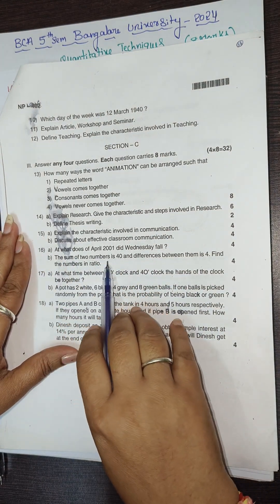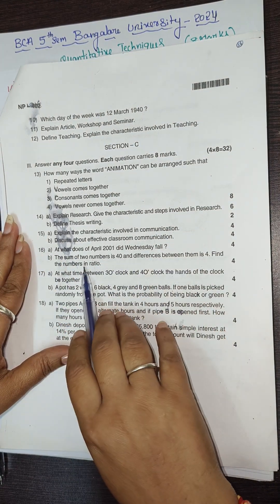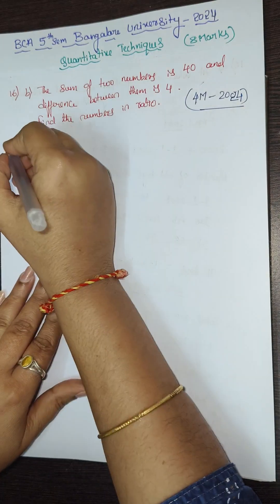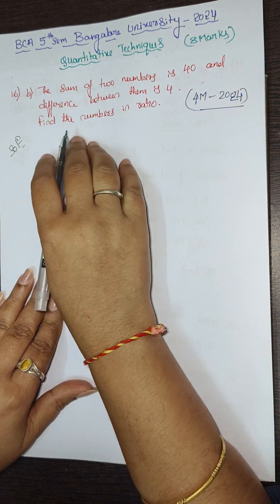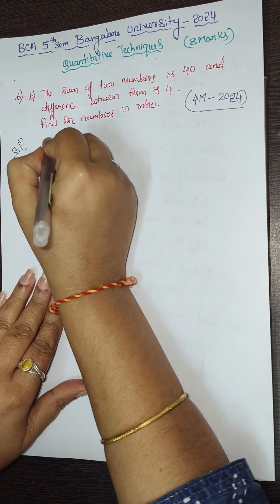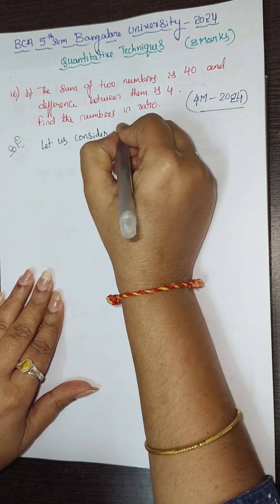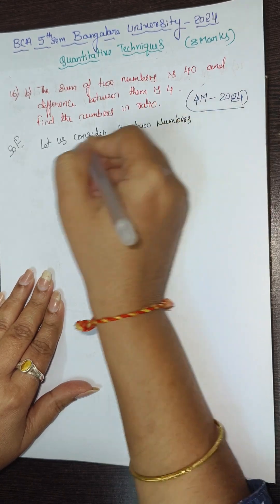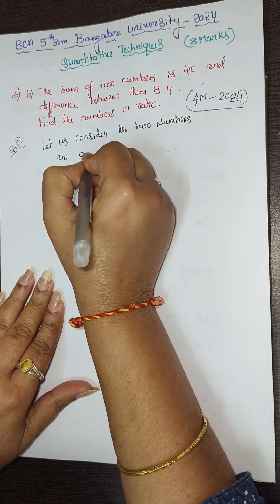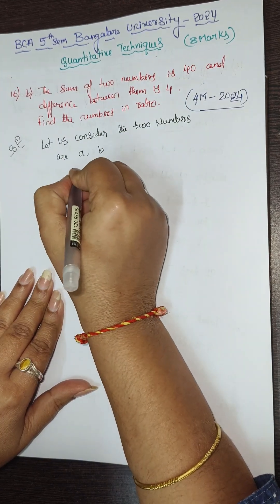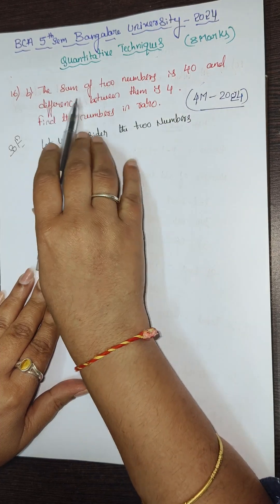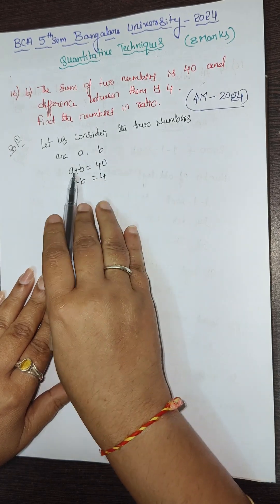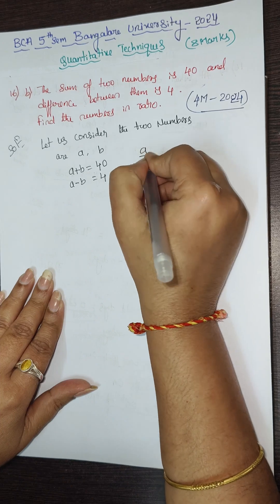The next question is: the sum of two numbers is 40 and the difference between them is 4. Find the numbers in ratio. Let the two numbers be a and b. The sum of two numbers is 40, so a + b = 40. The difference between them is 4, so a - b = 4. We need to find the ratio a divided by b.